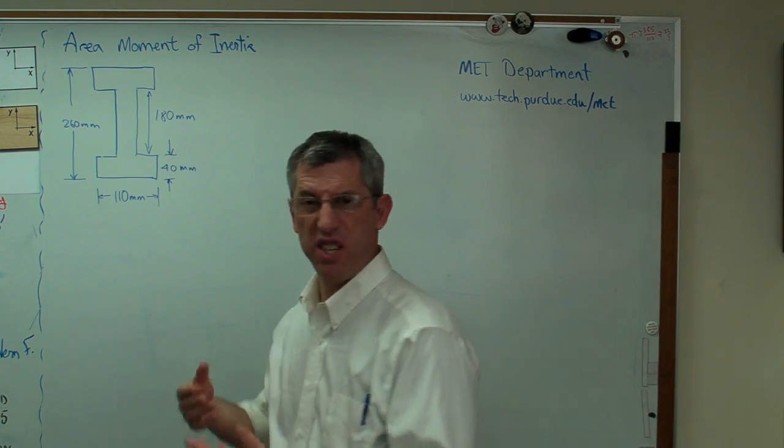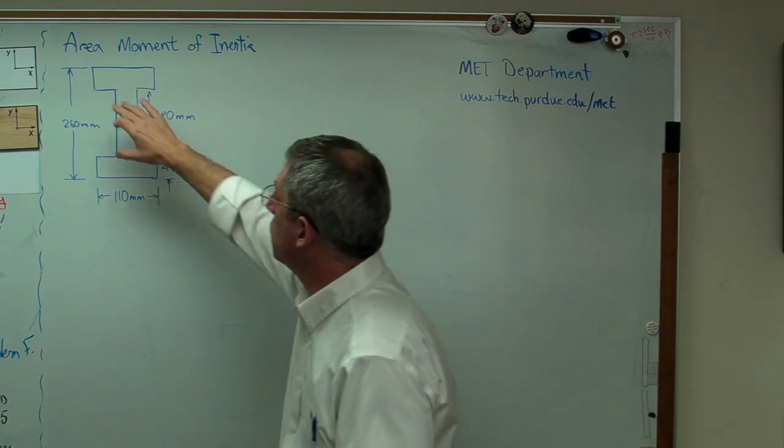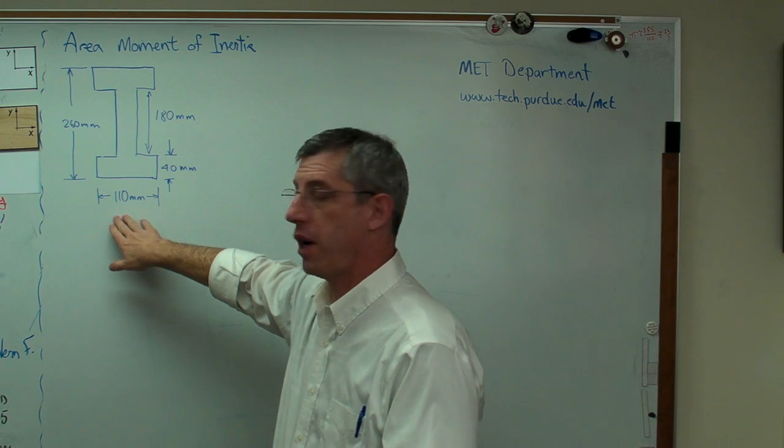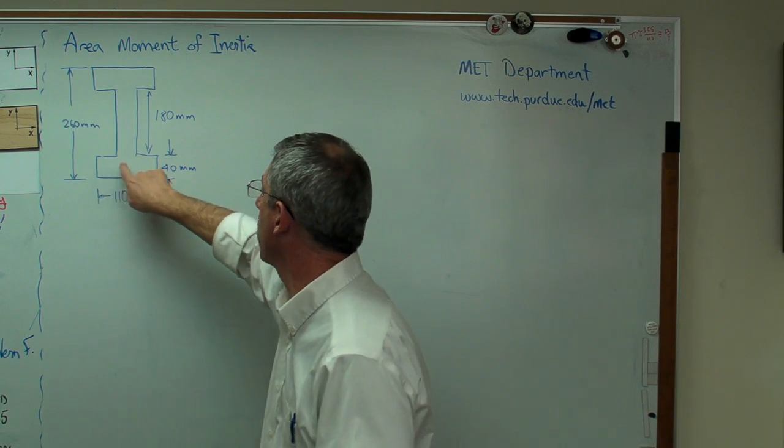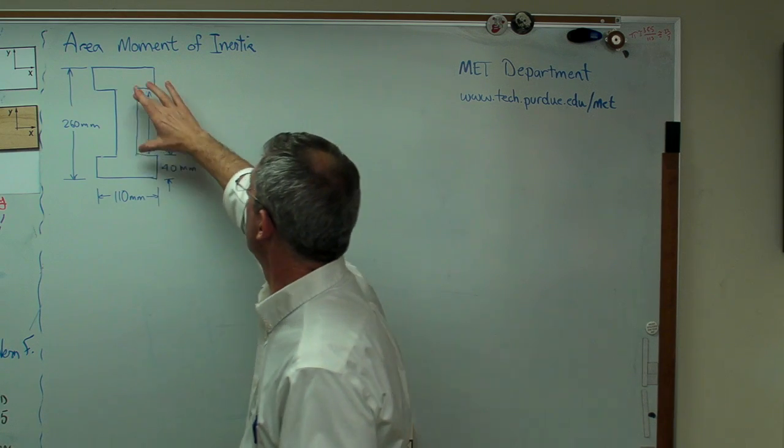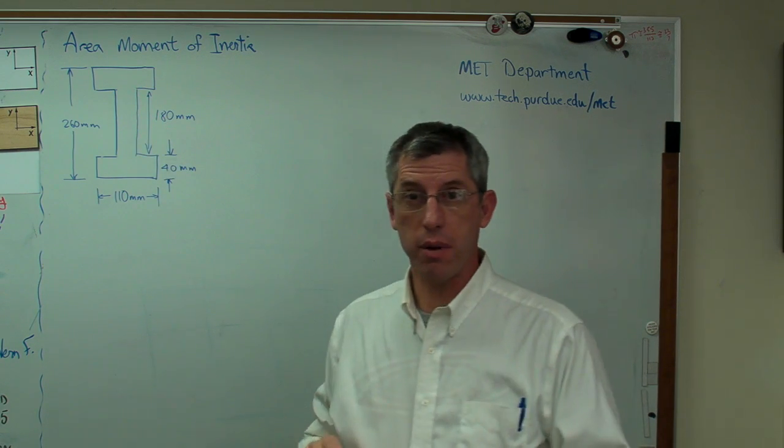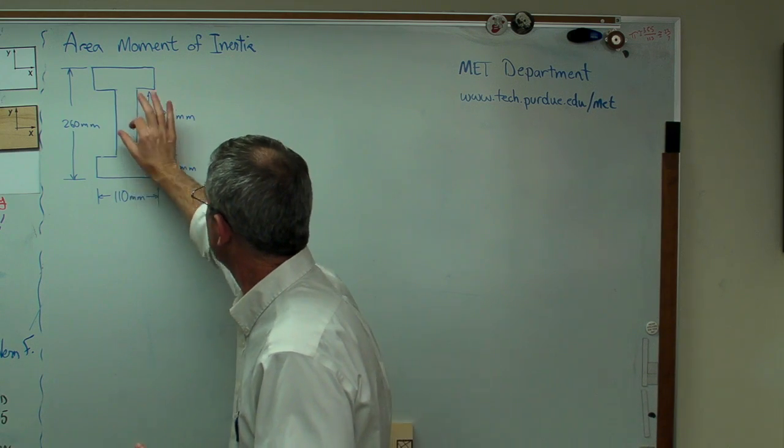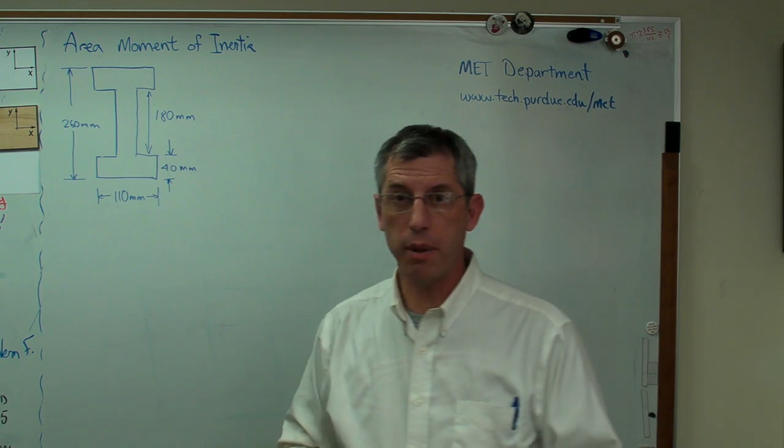I've got a cross-section of an I-beam I just made up here. It's 260 millimeters tall, 110 millimeters wide. This part here and here, those are called the caps. That web right there is 180 millimeters, and the thicknesses of each of those three parts is 40 millimeters.